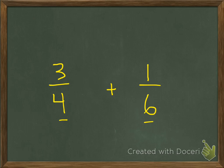We need to find a common denominator for 4 and 6. We could multiply 4 and 6 together to get 24 and use that, or we could find the least common denominator, which is 12 — because 12 is a multiple of both 4 and 6. We'll use 12 as the least common denominator and write equivalent fractions for three-fourths and one-sixth, both with a denominator of 12.